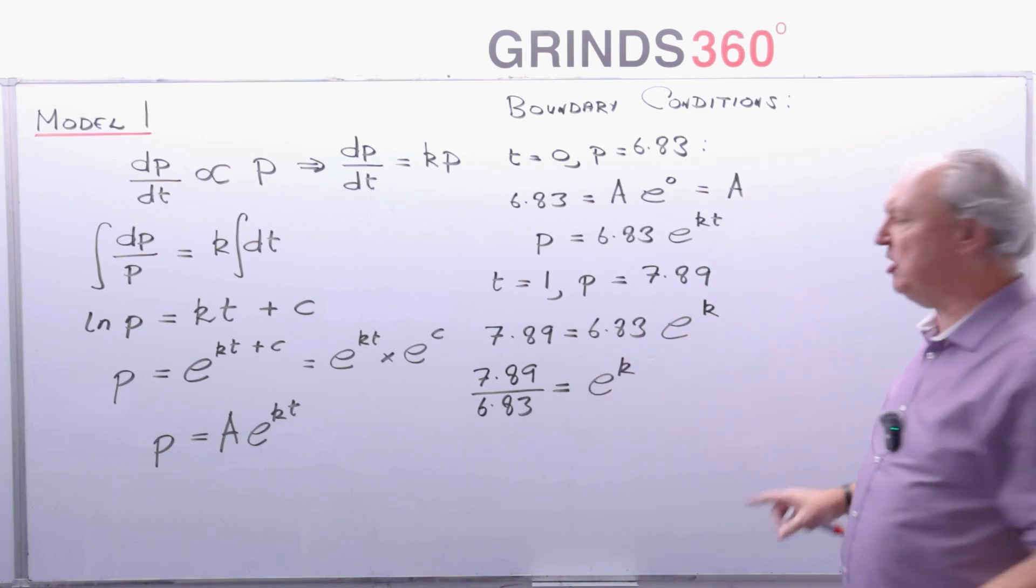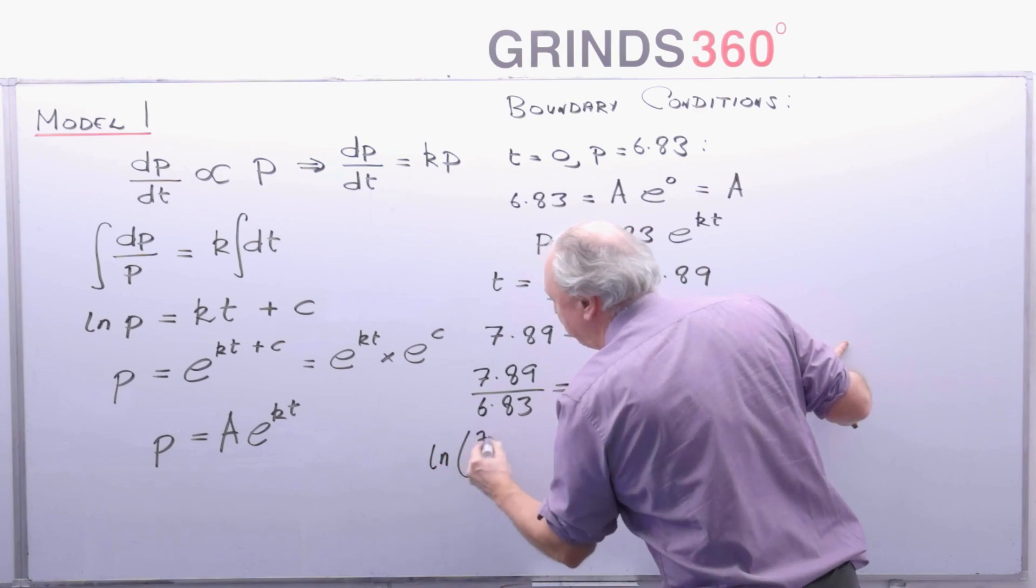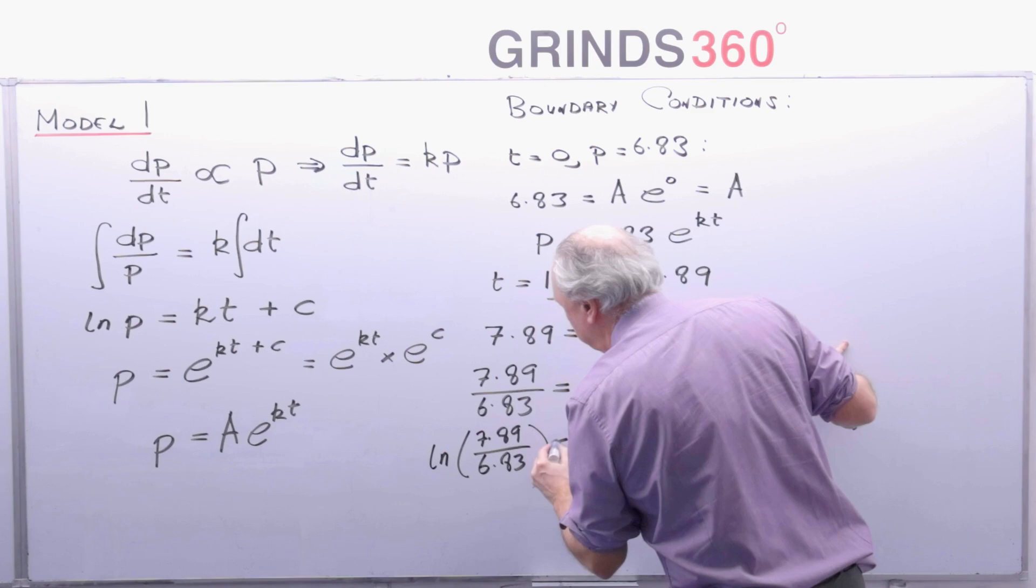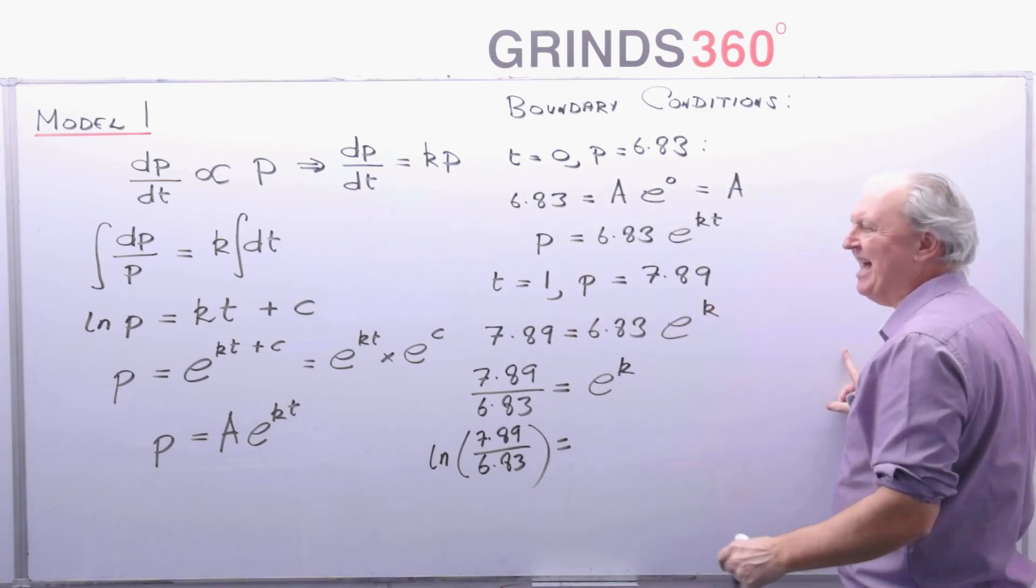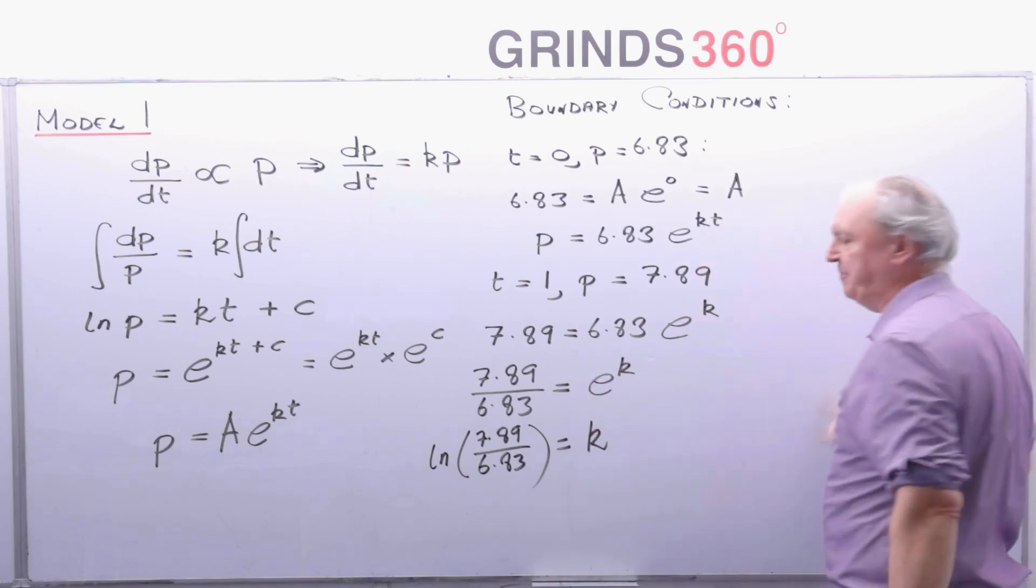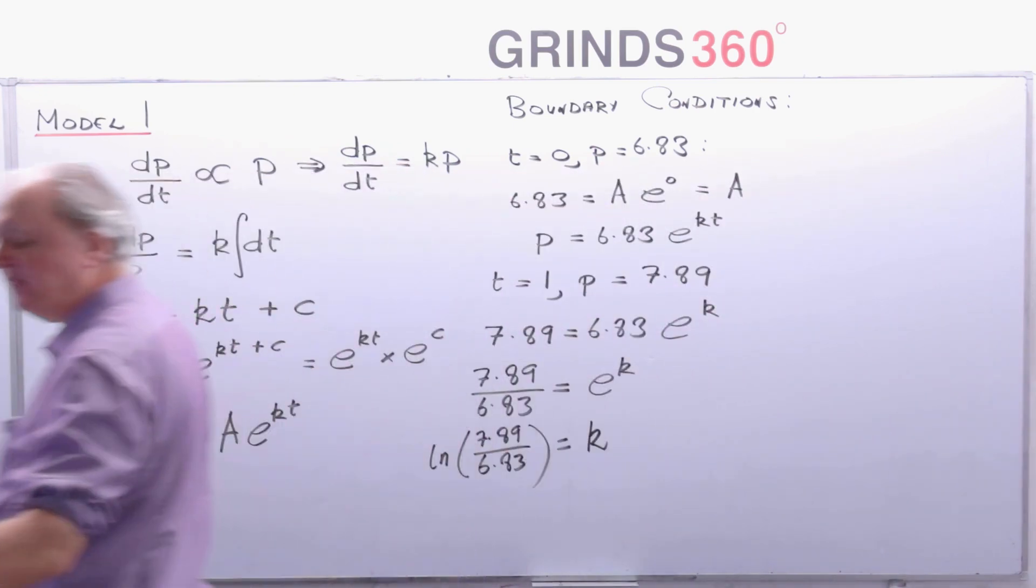Let me get the natural log of both sides. So the log of 7.89 divided by 6.83. And when you get the log of e to the power of k, you have that famous LNE rule. When they come together, they cancel. So I'm just left with k.